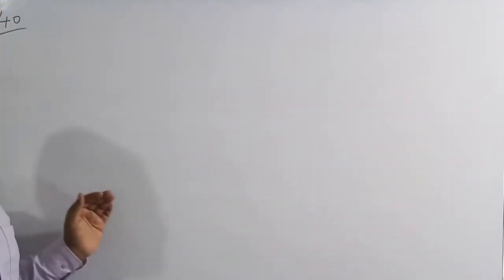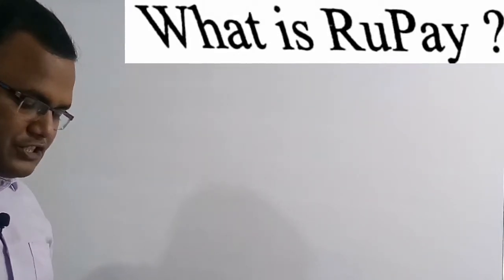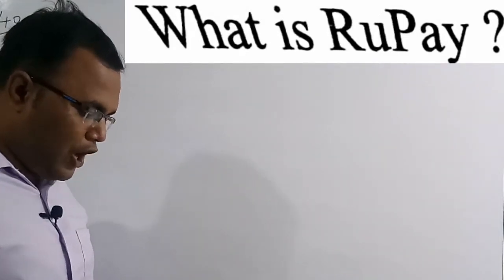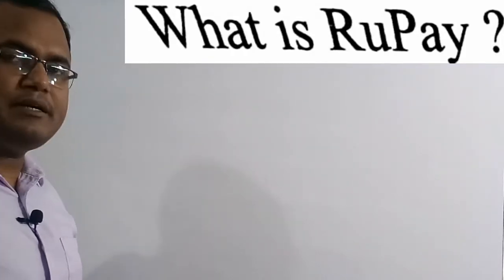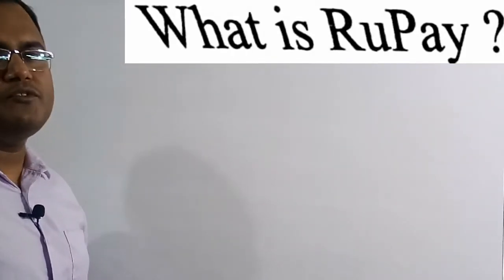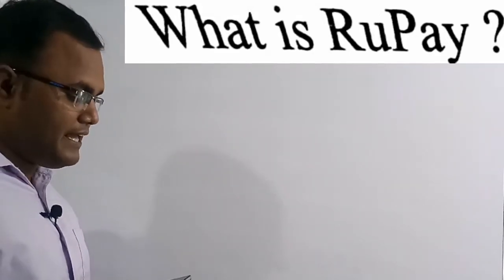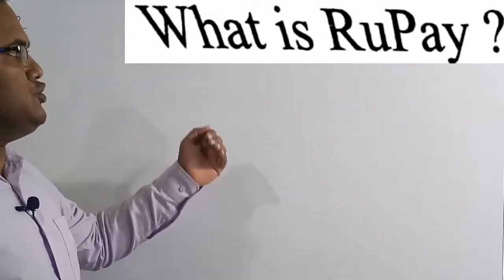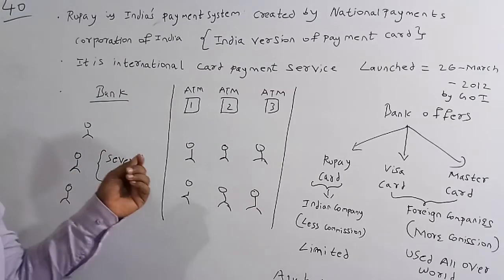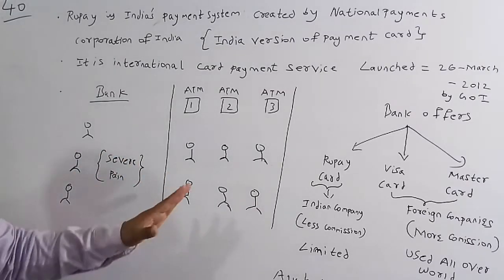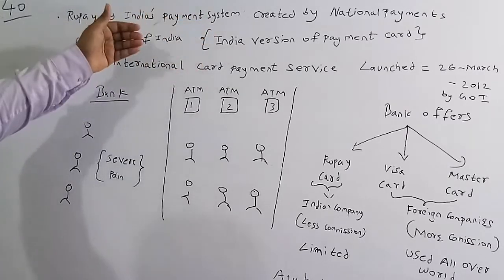Now we will discuss the 40th question: What is RuPay? Option A: Indian version of payment card, Option B: Online portal for payments, Option C: Electronic money, Option D: Indian Bitcoin. The correct answer is Option A — Indian version of payment card.